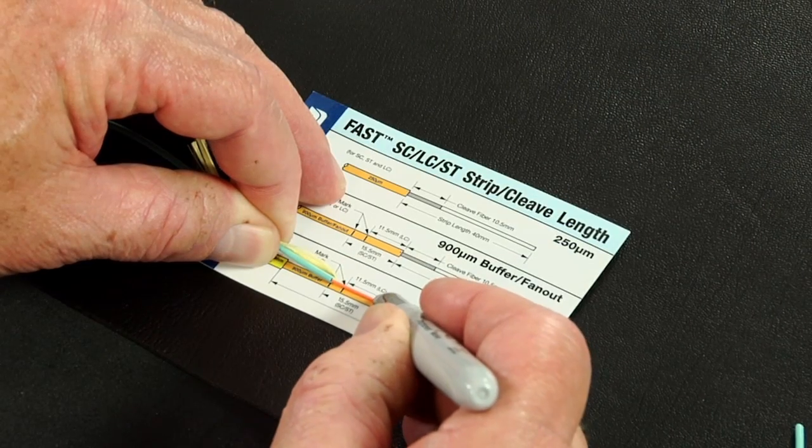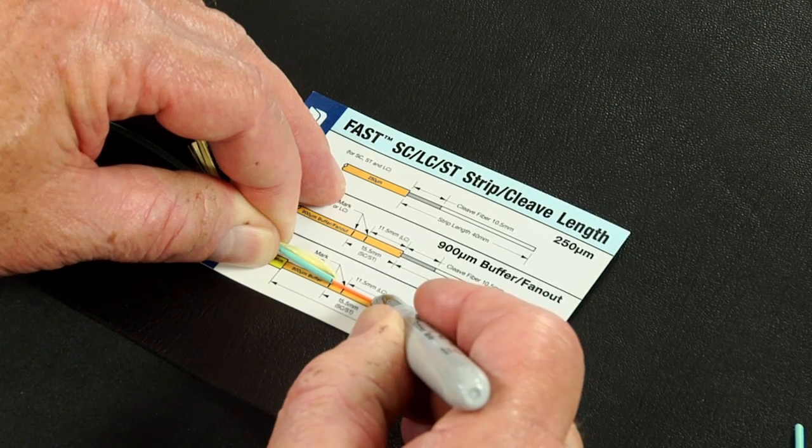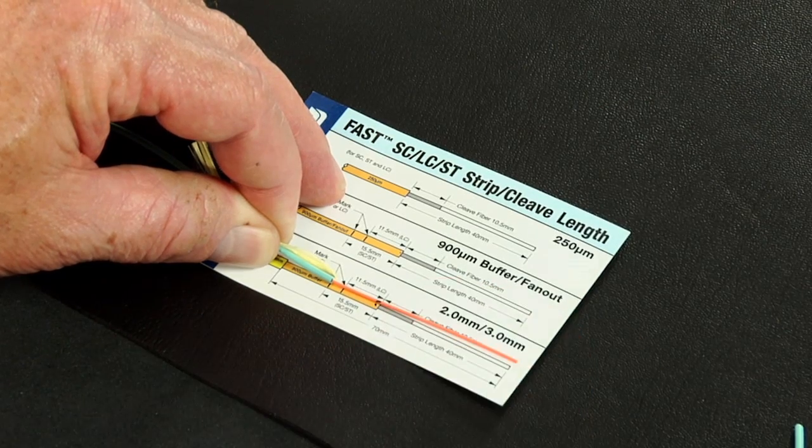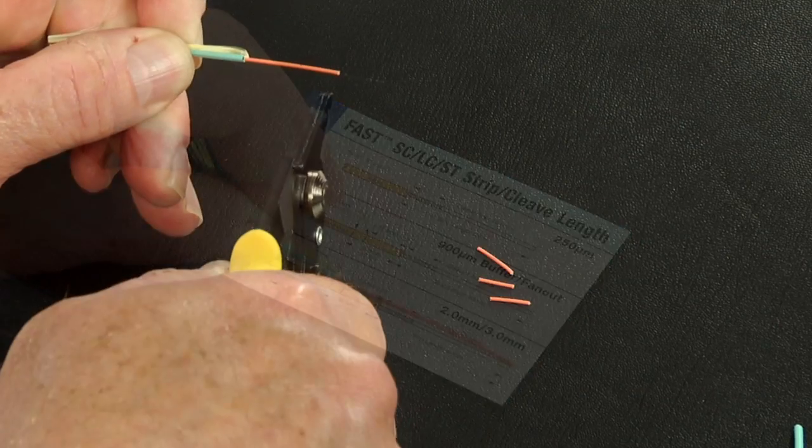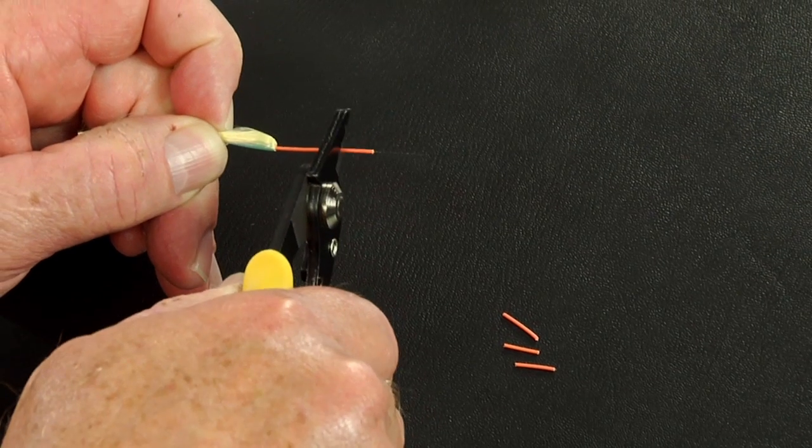Refer to the strip template and mark the 900-micron fiber at 35 millimeters from the end of the fiber. Strip 35 millimeters of 900-micron coating from the fiber.